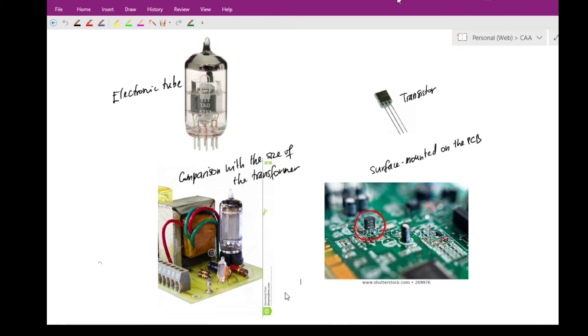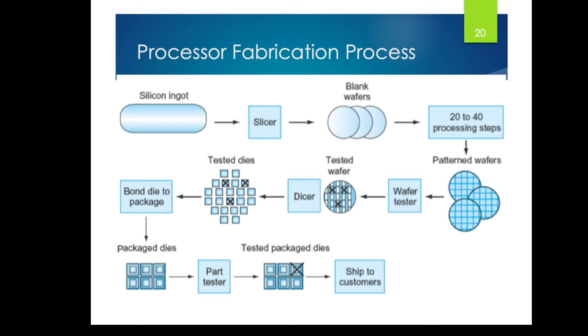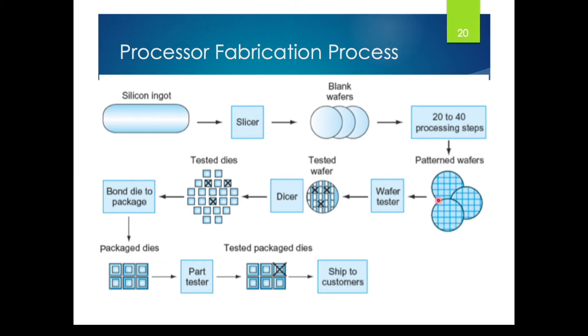Now let's take a look at the processor fabrication process. The slide that you are watching illustrates the CPU and the chips in general fabrication process. The fabrication starts with a silicon ingot, which has been developed previously through a growing silicon ingot process. The ingot is sliced with a slicer to generate blank wafers. The blank wafers are processed carefully and meticulously to produce qualified wafers ready for making the chip. After wafer testing, the dies are cut out from the wafer through wafer dicing process.